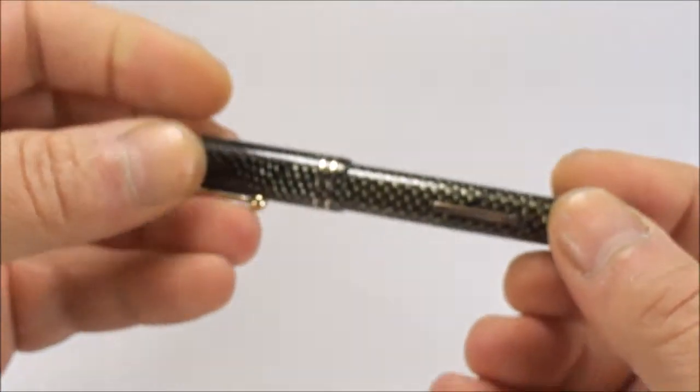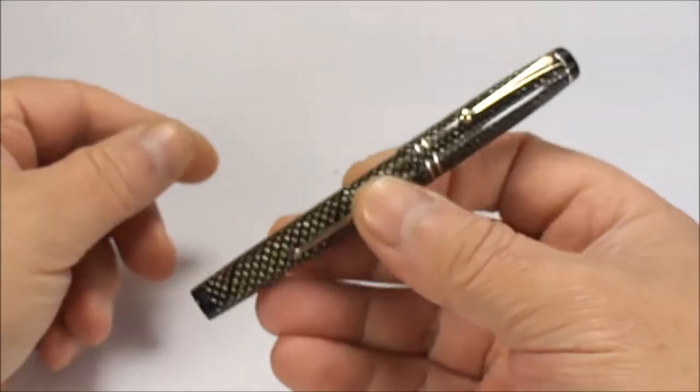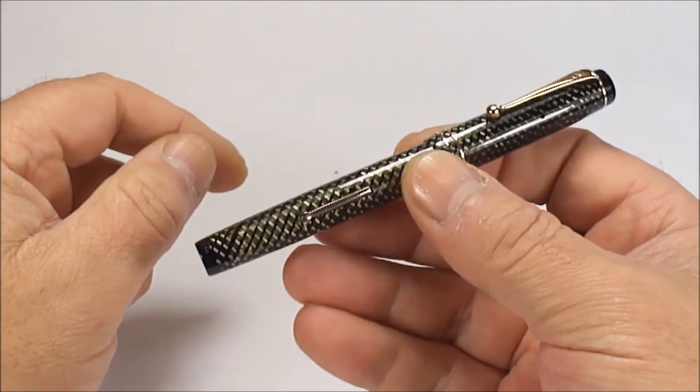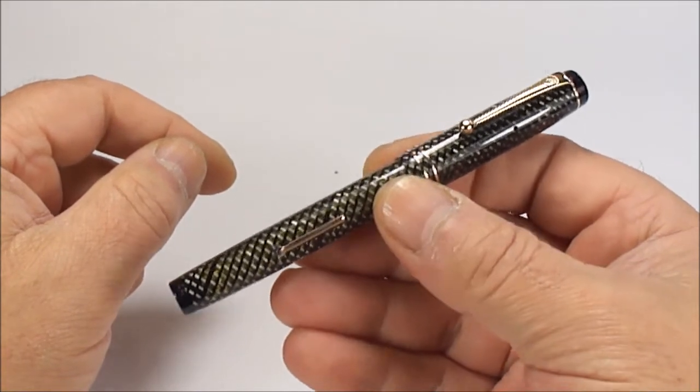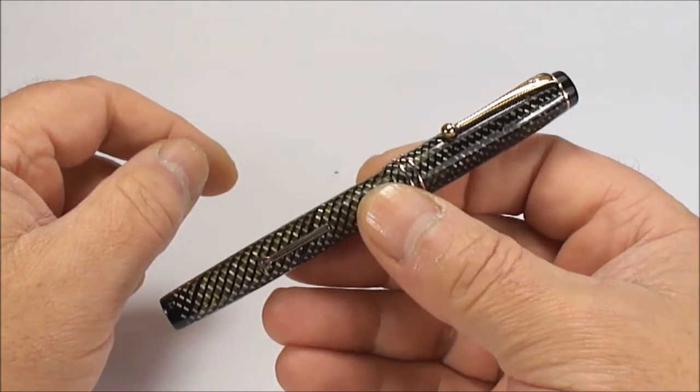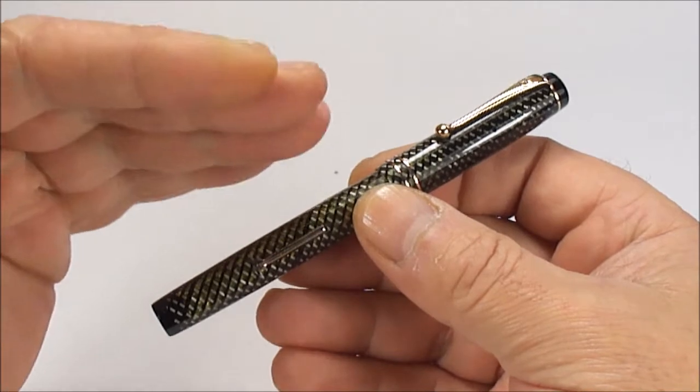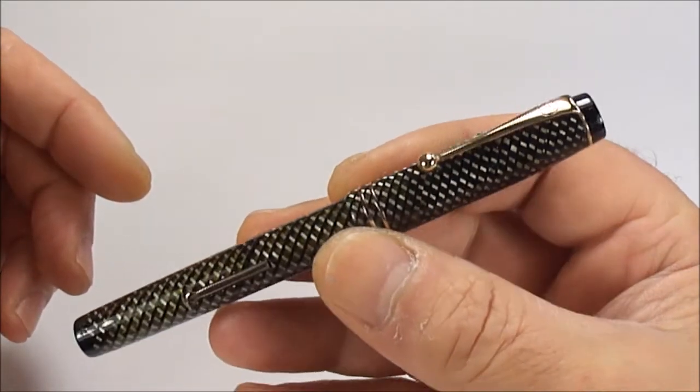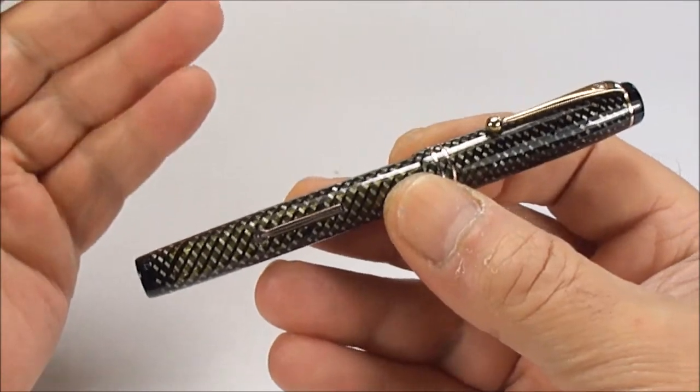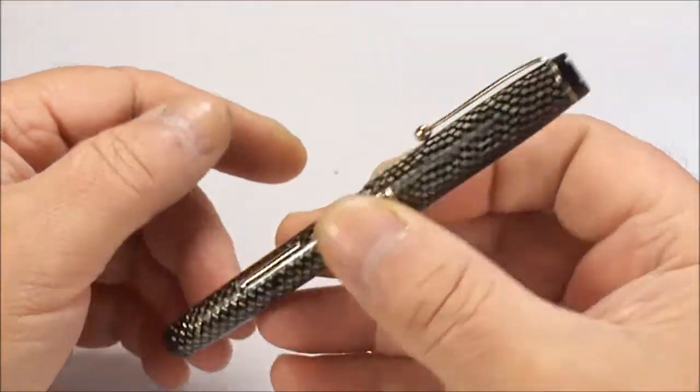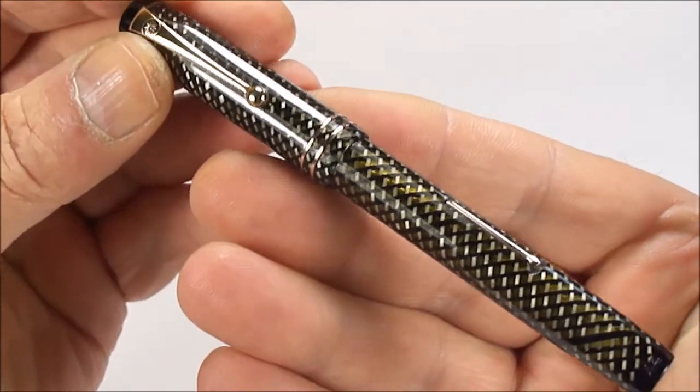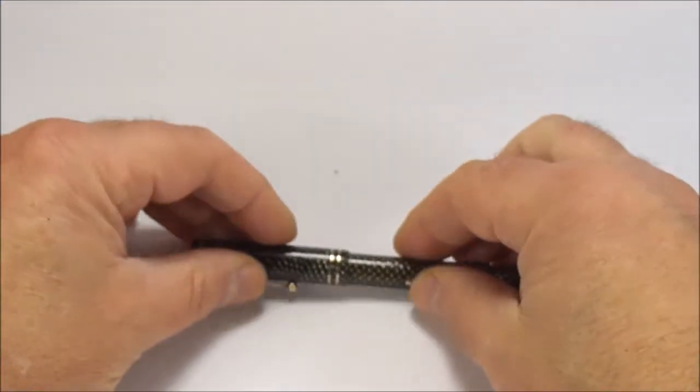So there we go, there's the model number. So there we have it, an absolutely gorgeous De La Rue pen made in Great Britain in this green and black mesh pattern, beautiful condition from the 1930s, new sack restored, absolutely gorgeous quality made fountain pen.